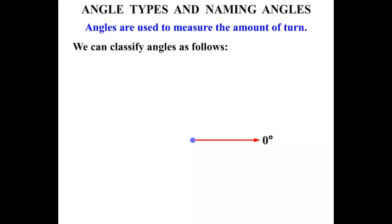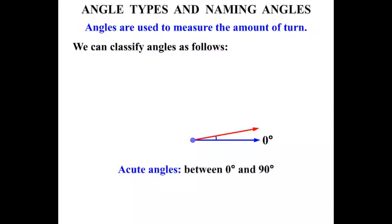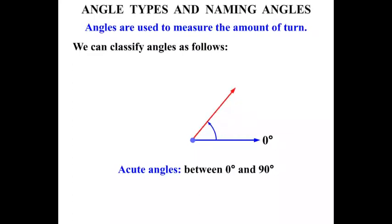Now we can classify angles as follows. Let's start turning this red arm. An angle that's created is known as an Acute Angle. These are angles between 0 and 90 degrees. All of those angles so far are acute — they're less than 90 degrees.